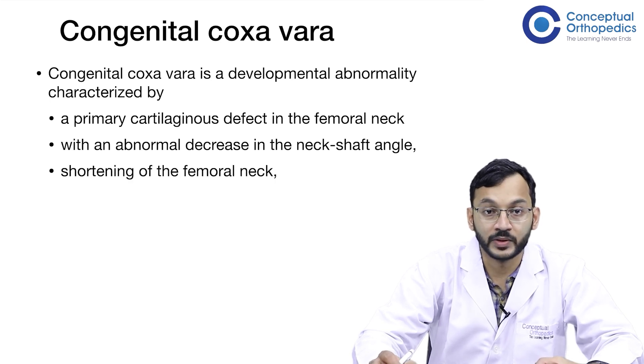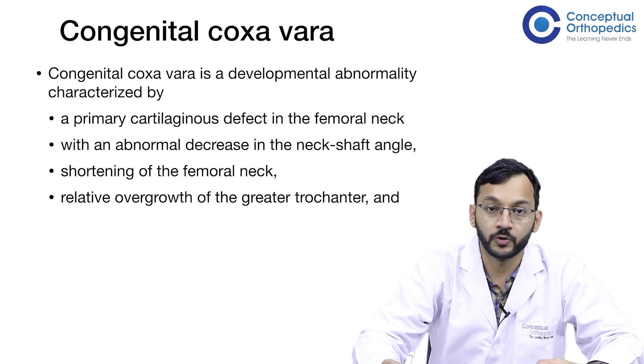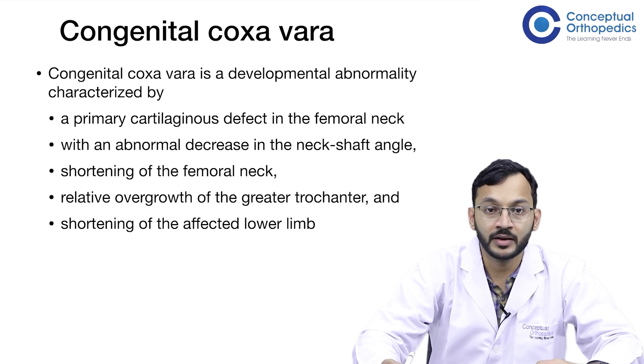Along with this, we can see shortening of the femoral neck, relative overgrowth of the greater trochanter, and a shortening of the affected lower limb.